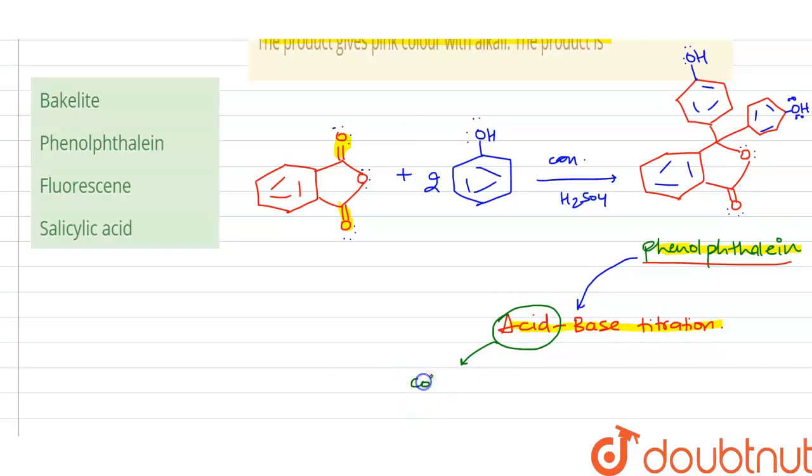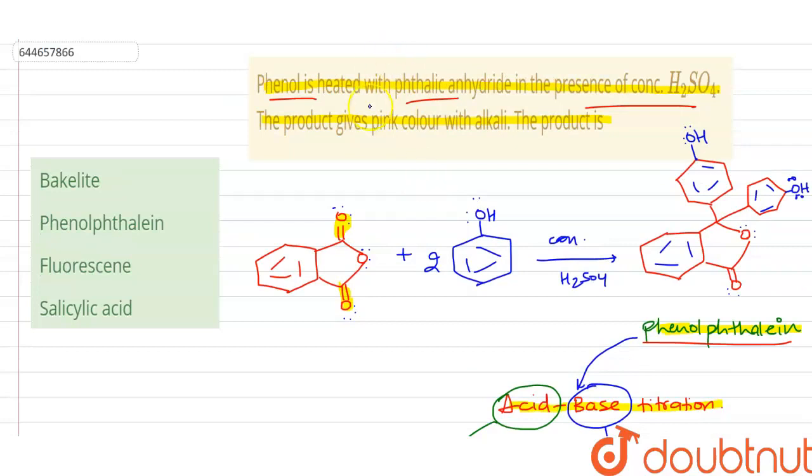the pink color. So here in this question, it has been asked about this product that gives the pink color with the alkali. So we can easily say that this is the phenolphthalein which is used in acid-base titration.